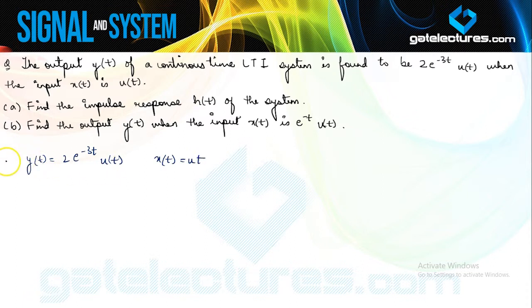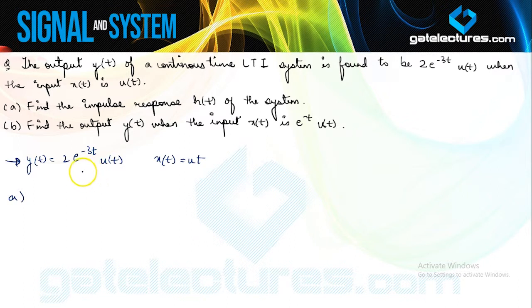In the first part they are asking you to calculate the impulse response h(t) of the system. There is only one way to calculate h(t) — the impulse response — which is to relate this input and output. The only possible way to relate these two is by finding the transfer function of the system. After we find the transfer function H(s) we can just take the inverse Laplace transform and find the impulse response.